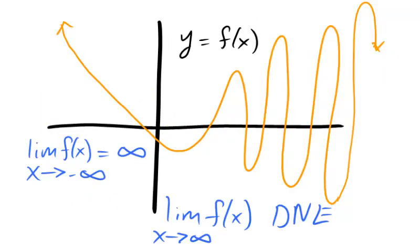Some functions can fail to have a limit at infinity. Periodic functions, like the trig functions, do not have a limit at infinity. The function f fails to have a limit as x approaches positive infinity, as the function appears to have greater fluctuation as x gets larger.